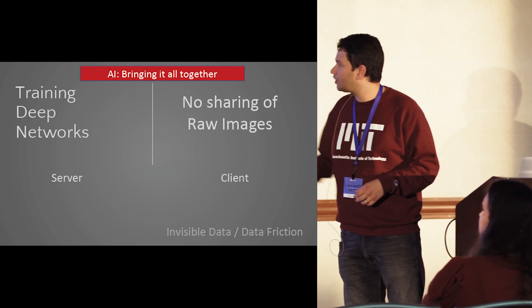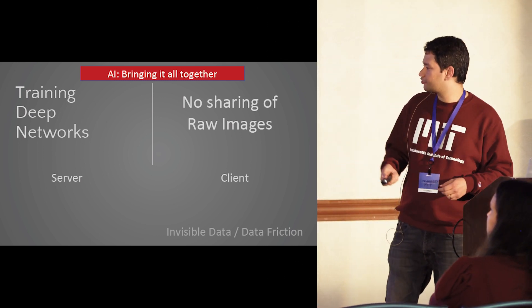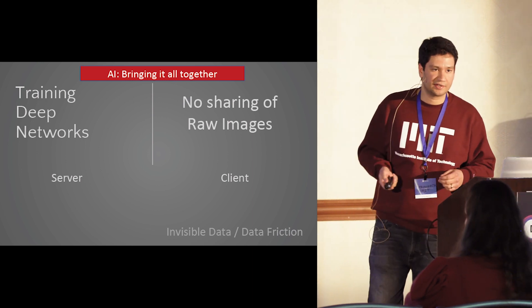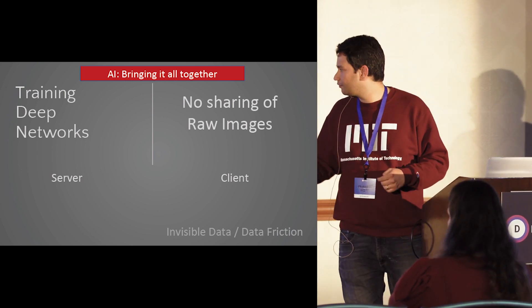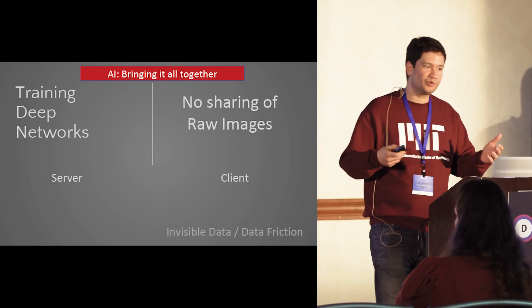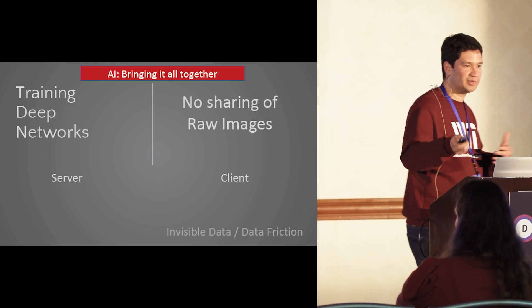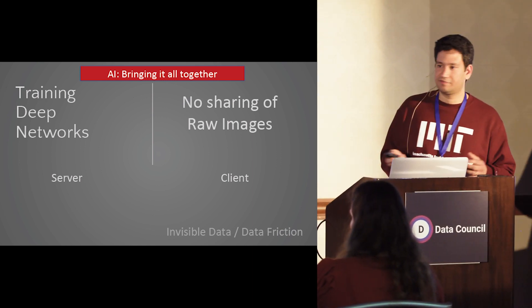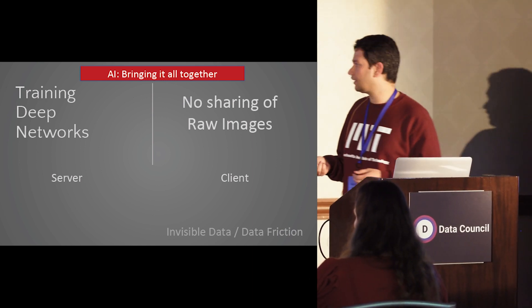The problem: we want to train deep networks with no sharing of raw images or raw data in general. There could be one server and multiple clients in a hub-and-spoke model, or a peer-to-peer model. Split learning allows for multiple configurations.